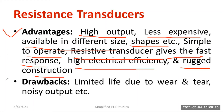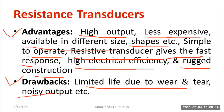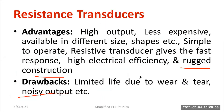Regarding disadvantages, there is limited life due to wear and tear — in the linear type, the slider moves up and down, causing wear on the resistive element, so the lifespan of the equipment is less. Also, the output is noisy; we won't get a smooth output. That is another drawback of this type of resistive transducer.